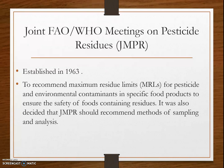The JMPR was established in 1963 to recommend Maximum Residue Limits for pesticides and environmental contaminants in specific food products, to ensure the safety of foods containing residues. It was also decided that the JMPR should recommend methods for sampling and analysis.